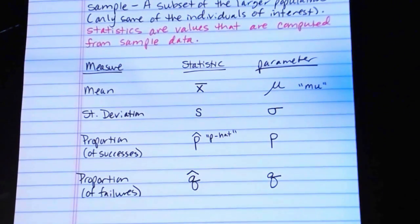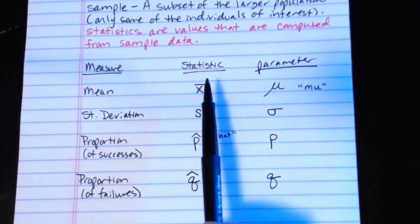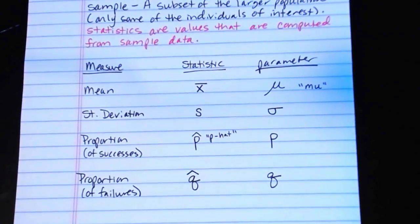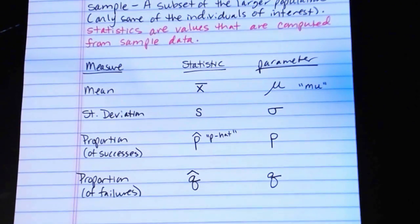All of these are summarized in that symbol sheet that you can download, along with a lot of other symbols delineating the difference between statistics and parameters. But these are some of the most common ones that we'll be working with throughout the rest of the course. So you might want to familiarize yourself with the symbol sheet and review these.